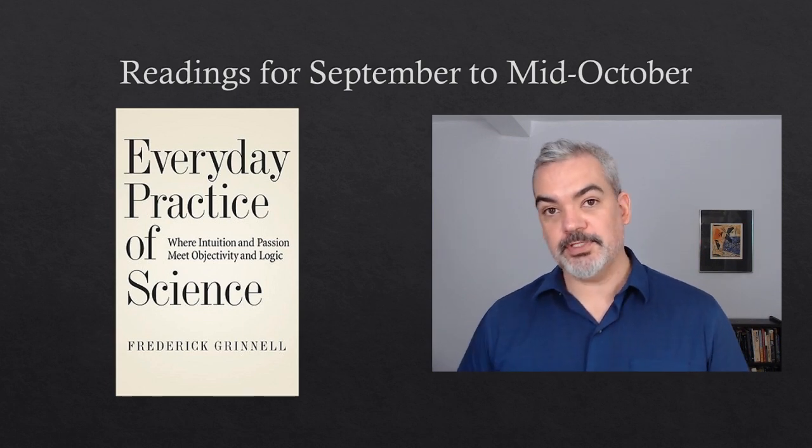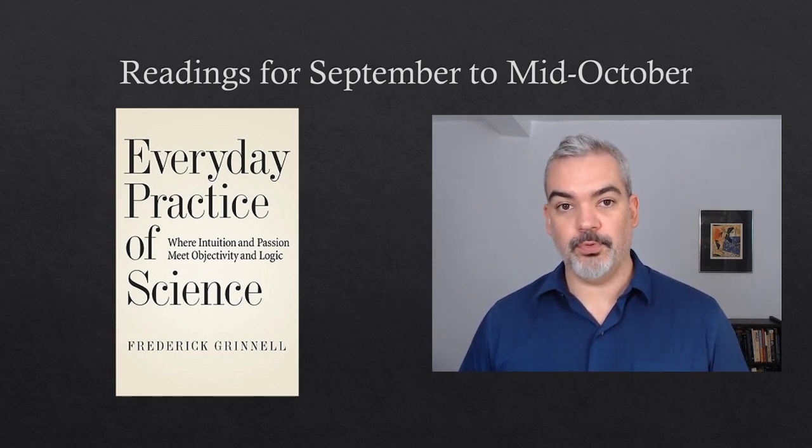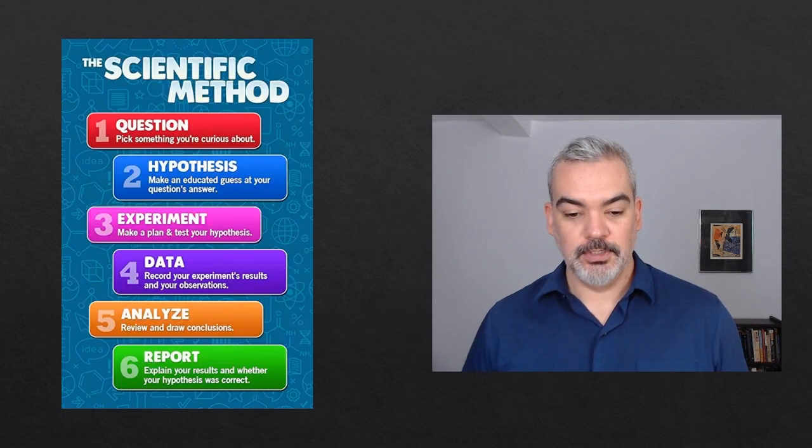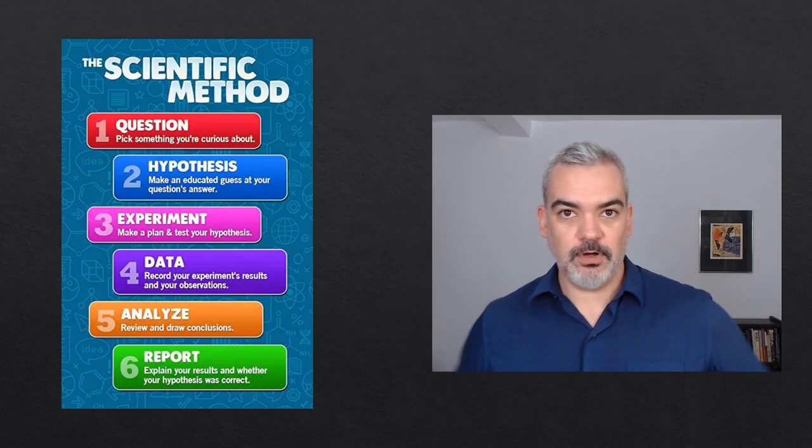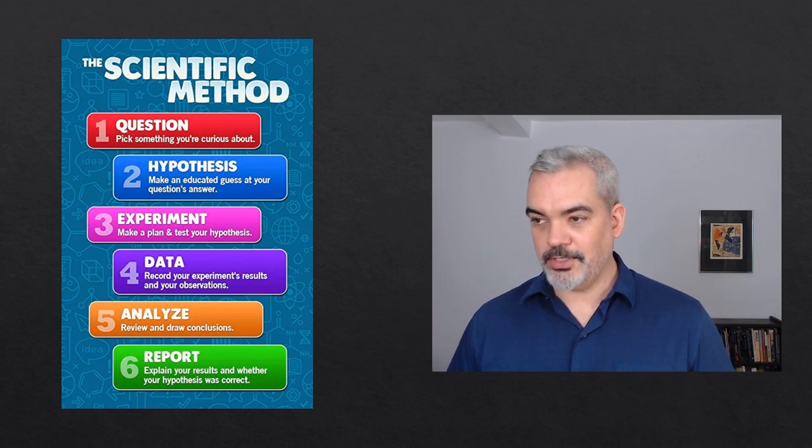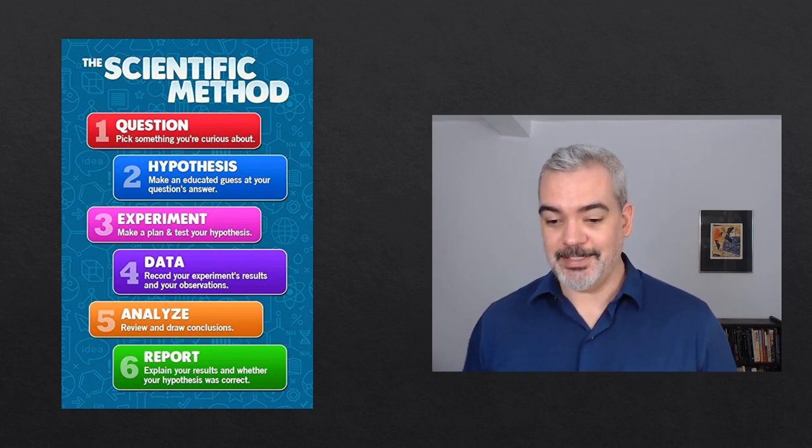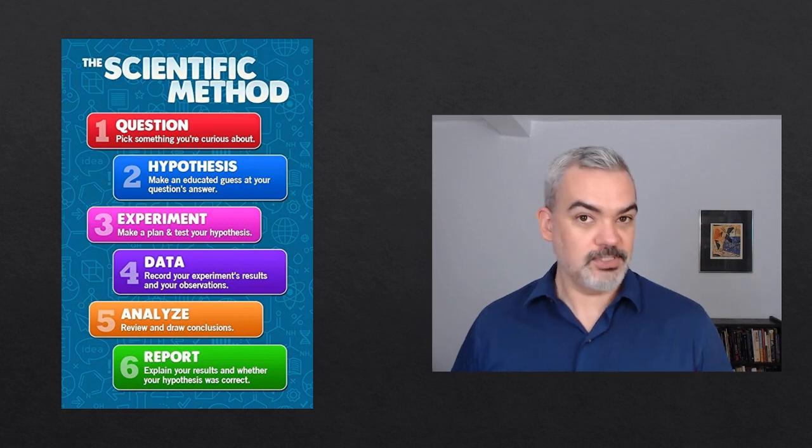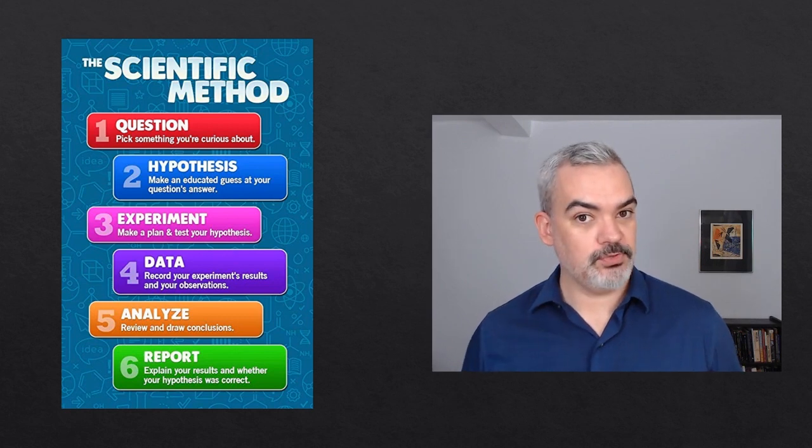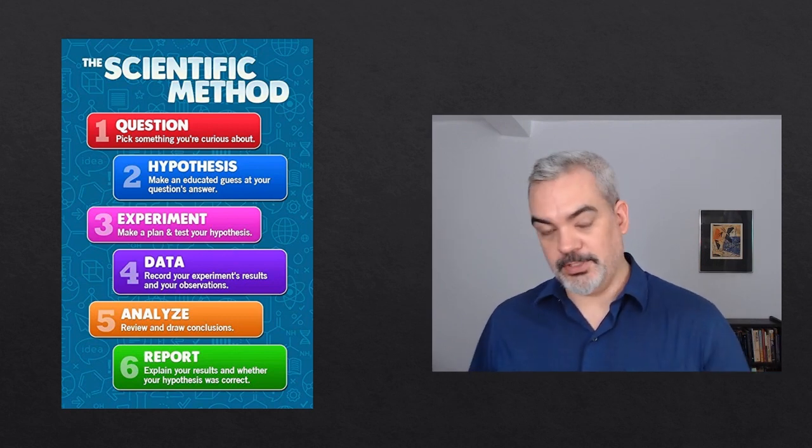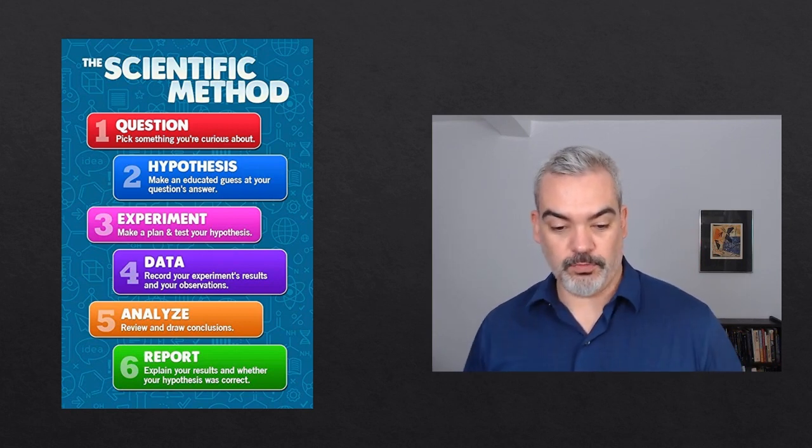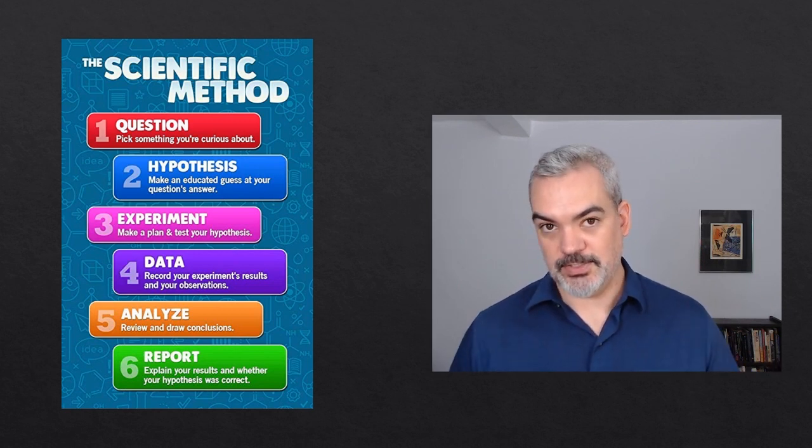So Grinnell is going to make this case that values have a really important role to play, particularly in the cutting edge of science. He's going to try to convince us to stop thinking about science in this way. So here's an image of what we sometimes call the scientific method. This is something you're probably familiar with if you did a science fair in elementary or high school. It goes: one question, pick something you're curious about; two hypothesis, make an educated guess; three, do an experiment; four, record your data; five, analyze that data; and six, do a report.